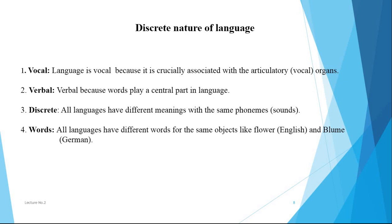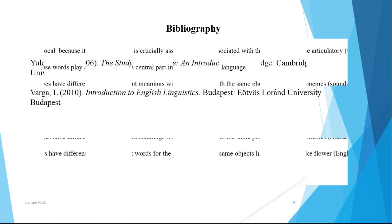Language is vocal because it is crucially associated with the articulatory or vocal organs. It is verbal because words play a central part in language. It is discrete because all languages have different meanings with the same phonemes or sounds. And languages have different words for the same objects — for example, 'flower' in English and 'Blume' in German.